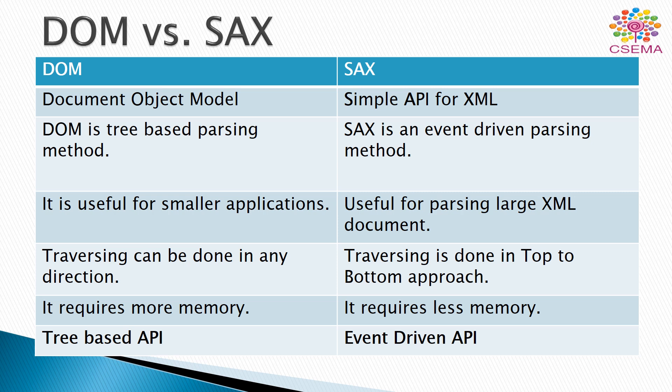In DOM, traversing can be done in any direction — it doesn't enforce any preferred way to traverse the content stored in the XML document. But in SAX, traversing is always done in a top-to-bottom approach, meaning the book order detail must be processed first, then customer details, then customer name.